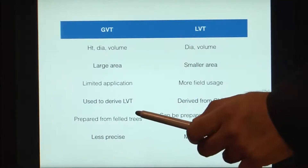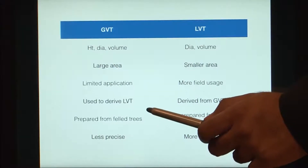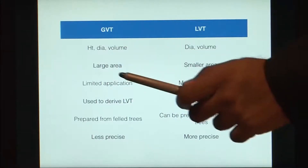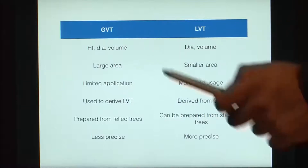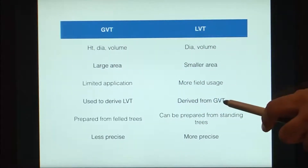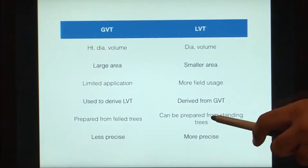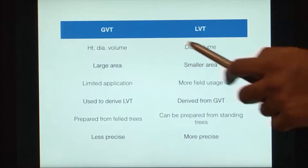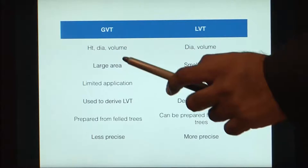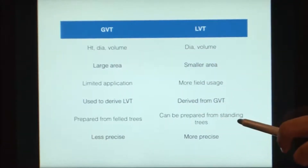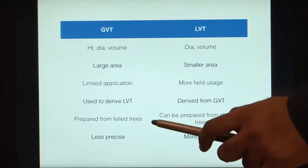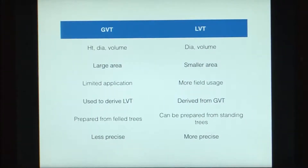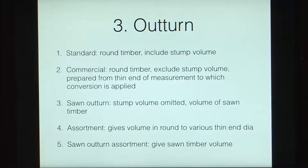The general volume table has limited application in field situations because you have to measure both height and diameter to get the volume, whereas for a local volume table you only measure one value — the diameter — so it has more field usage. The general volume table is prepared from felled trees by measuring all variables and measuring volume from sections. Because the local volume table is derived from the general volume table, it can be prepared from standing trees by measuring only diameters. The general volume table is less precise for field applications, while a local volume table is much more precise.